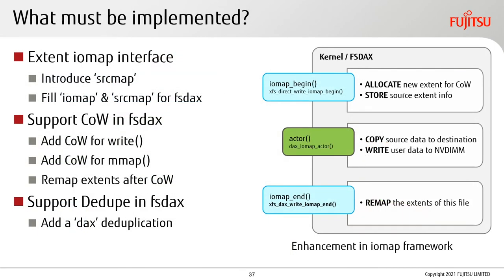To solve the issue, what must be implemented? Looking at the IOMAP framework, we need to allocate new extents for copy-on-write and store source extent info somewhere. We introduce a srcmap structure to store source extents. Then we copy source extent data to new extents and write user data into them — this is the copy-on-write operation needed in the write and mmap paths. Remapping is also necessary after copy-on-write, and IOMAP end is a good place to do that. We still need to implement a DAX-specific dedupe method.